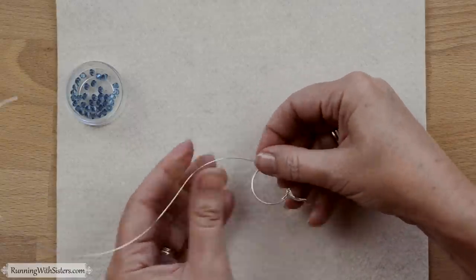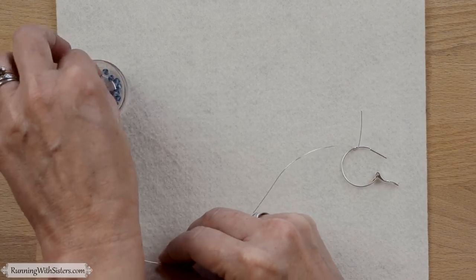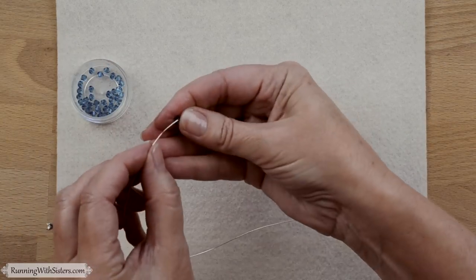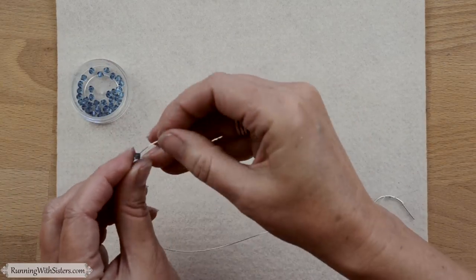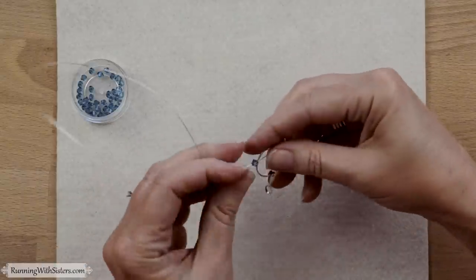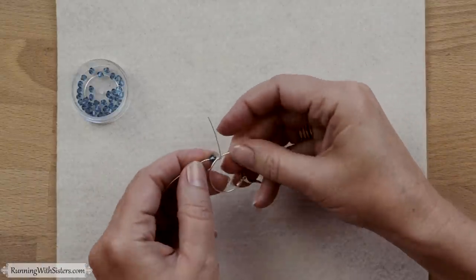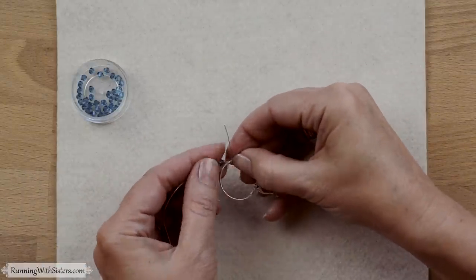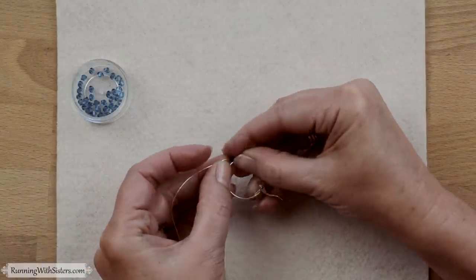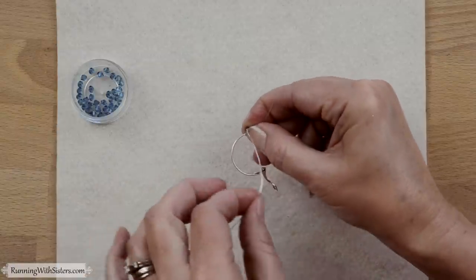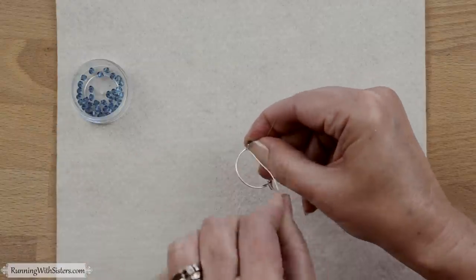So I've got that wrapped around three times and I'm going to feed a bicone onto the end of the wire. We chose bicone crystal beads because they have the little flat side that sits nicely up against the wire of the hoop. The bicone is sitting there. I'm going to hold it in place and then I'm just going to take the wire. I'm going to go into the hoop two times. One, two.